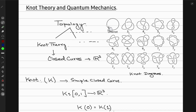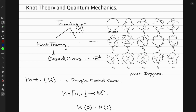In the notation, the unknot has no crossings. Then you have 3₁: there are three crossings, and the subscript 1 denotes its order amongst all knots with the same crossing number — there is only one knot with three crossings. Then 4₁ has four crossings, and again there is only one type. Then 5₁ has five crossings and is the first type, while 5₂ also has five crossings but is the second type of that knot. You can check the crossing number and order for all the others similarly.